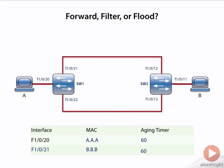We're not going to worry about how Switch 2 handled things. But you'll notice when that frame came back into Switch 1, we learned it. You can see here now my MAC address table has changed. Now, F1-0-21 has an entry for host B, because its source was seen on F0-21.